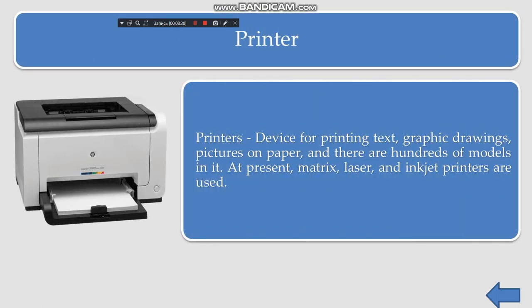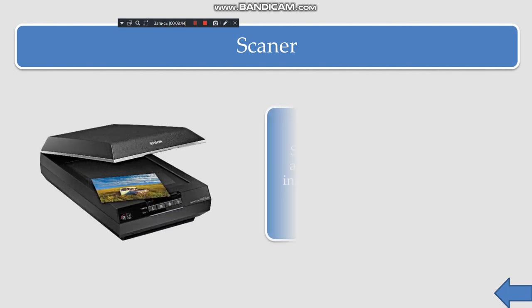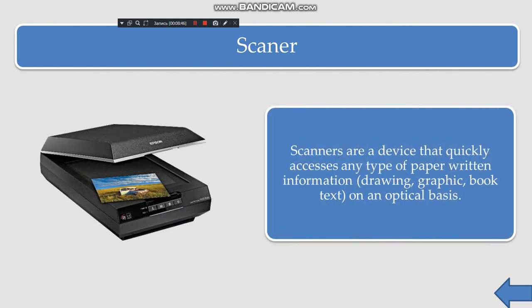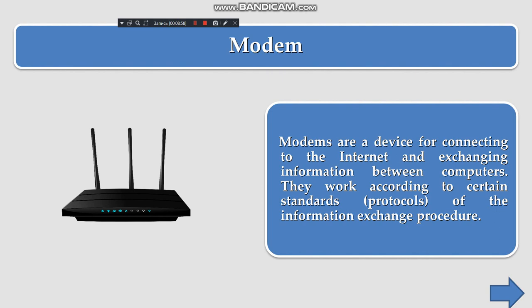A printer is a device for printing text, graphics, drawings, and pictures on paper. There are hundreds of models; currently matrix, laser, and inkjet printers are used. A scanner is a device that quickly accesses any type of paper-based information — writing, drawings, graphics, books, text — and reads it on an optical basis. A modem is a device that connects to the internet and exchanges information between computers, working according to certain standards of information exchange.